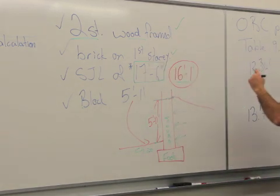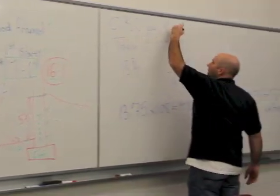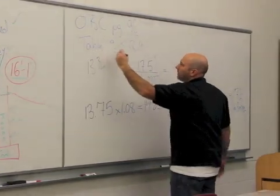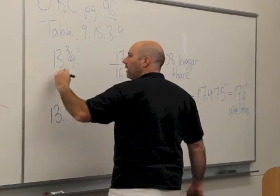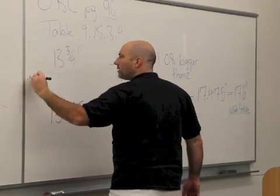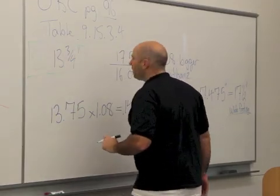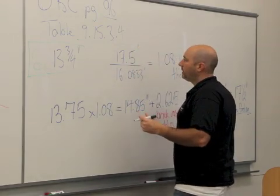Moving over here. Ontario Building Code, page 96, table 915.3.4, we find the two-story minimum strip footing for exterior walls is 13 and three-quarter inches, or 350 millimeters.